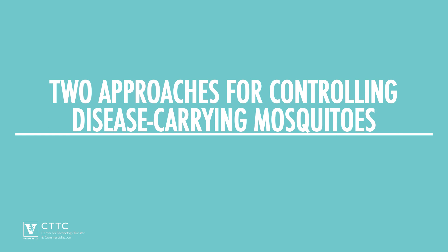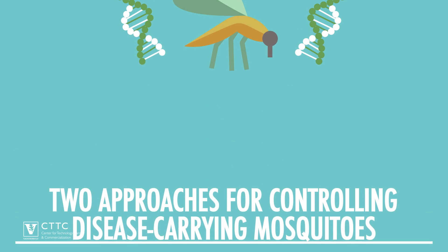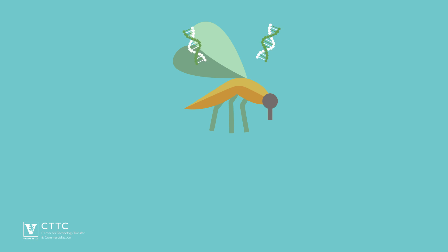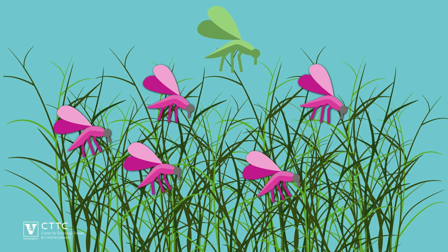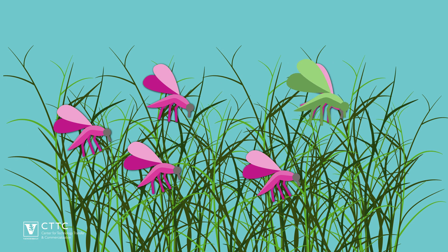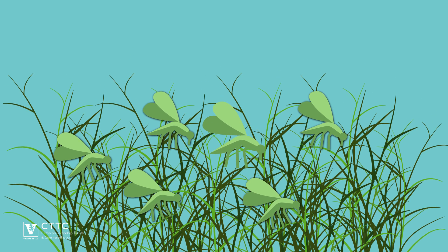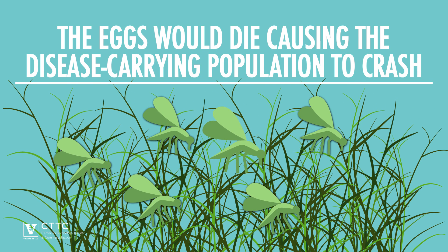These discoveries raise the possibility of two approaches for controlling disease-carrying mosquitoes. One approach would introduce male mosquitoes carrying the genes into a natural population. Once they mate with females, their eggs would die, causing the disease-carrying mosquito population to crash.